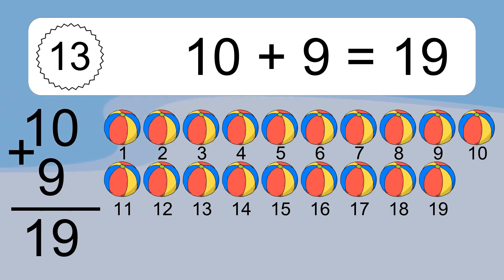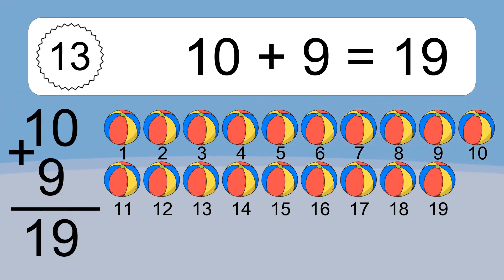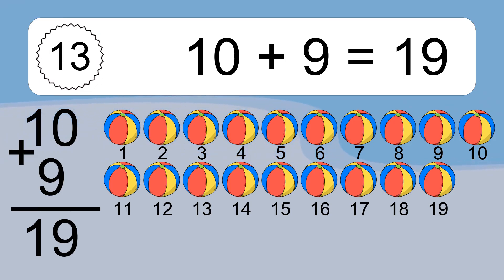Let's count it: 1, 2, 3, 4, 5, 6, 7, 8, 9, 10, 11, 12, 13, 14, 15, 16, 17, 18, 19.